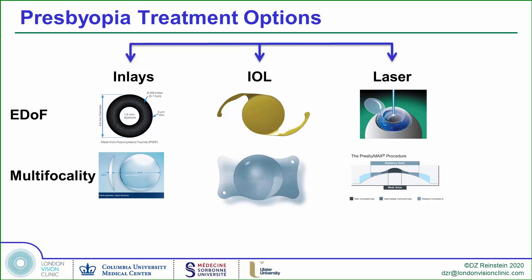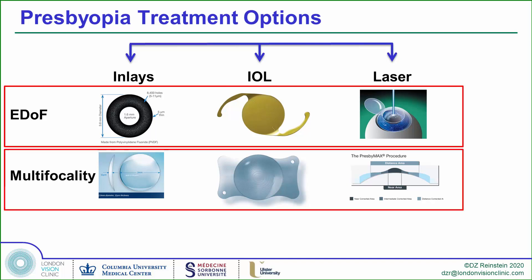Other than monovision, all three of the specific presbyopic surgical options fall into two main categories: extending the depth of field, or introducing multifocality — that is, two or more foci in the same eye.